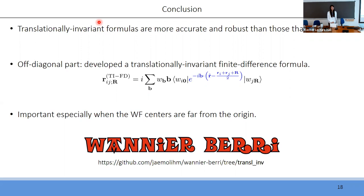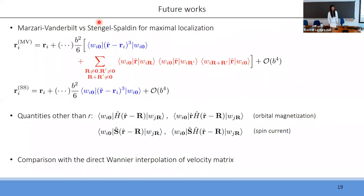Q: Regarding the default — if translational invariance in postw90 is enabled, it cannot be used when you have additional matrix elements like for orbital magnetization and so on. Can this procedure be generalized to those matrix elements, which have more than one R? A: Yes, this is one of our future works — I have not yet studied it, but I definitely will.